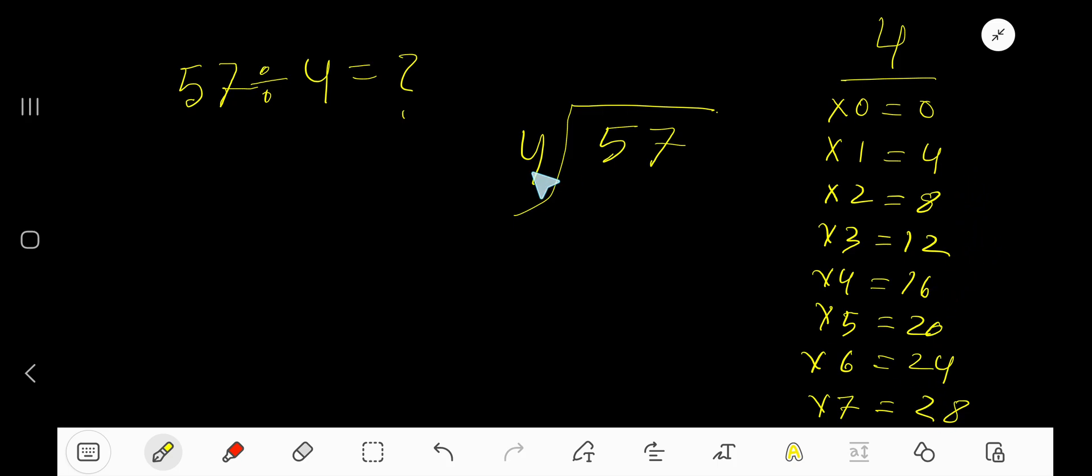This process will continue. 4 goes into 5 how many times? 2 times is 8, which is greater, so 1 time. Write 1. 1 times 4 is 4, subtract 1, bring down the next digit.